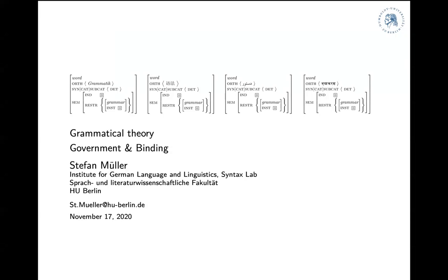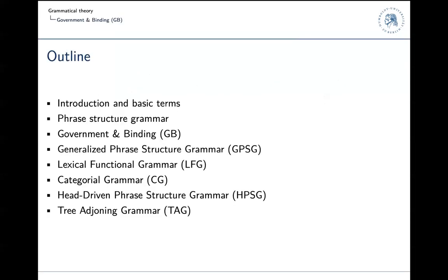Welcome to the next session of the grammatical theory lecture. Today we will start with the first real theory: Government and Binding. This is an outline of the whole course. We already covered introduction and basic terms, phrase structure grammars, and now we are at Government and Binding. The reading material for Government and Binding is section 3.1 — the basic introduction to the framework — and there will be more parts on passive, local reordering, and German clause structure.